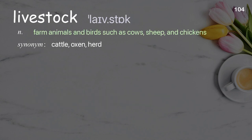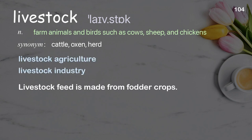Livestock: farm animals and birds such as cows, sheep, and chickens. Examples: livestock agriculture, livestock industry. Livestock feed is made from fodder crops.